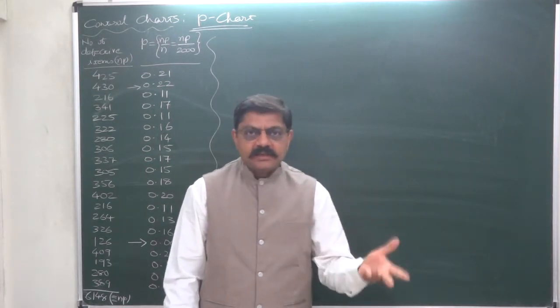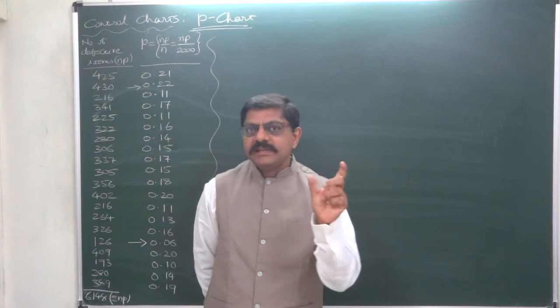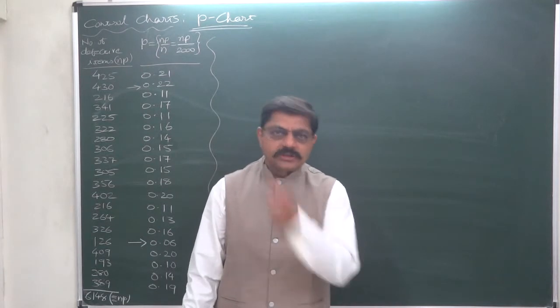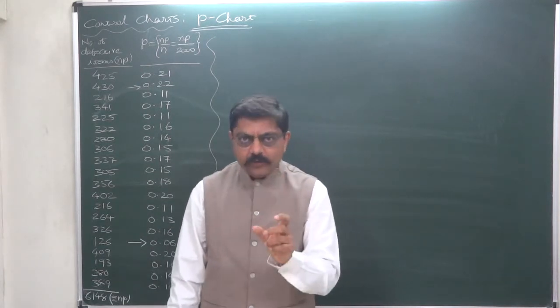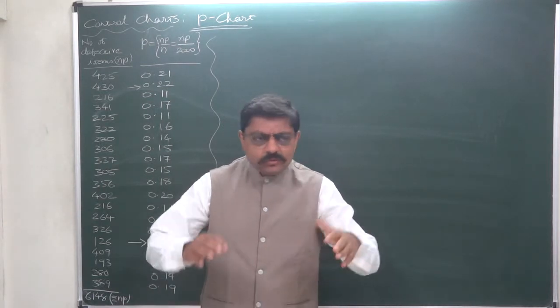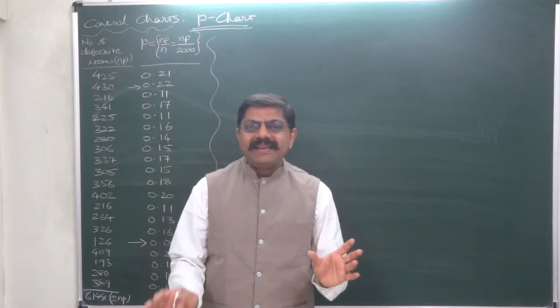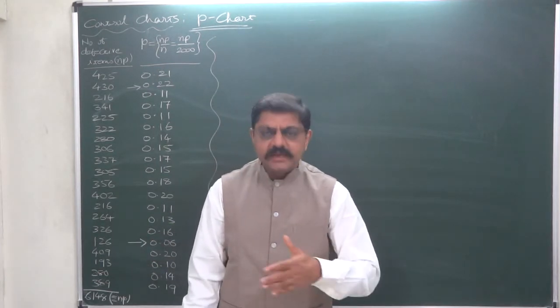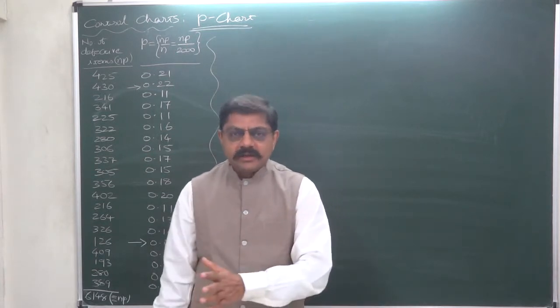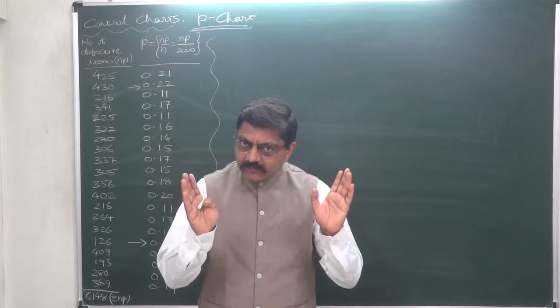We can take this much larger sample because we don't need to measure each and every of these 2000 items. That's why this is possible. In case of control chart for variables, that's not possible. Therefore, there are very small sample sizes. You can remember we had solved a problem having sample size of 5 units only. Because we need to measure particular characteristic in all the items of the sample. Here, that's not needed. Whether it is defective or not, we just want to know about each and every item.